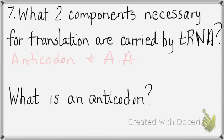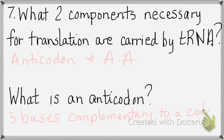An anticodon is three bases on a tRNA that are complementary to a codon. The anticodon is not exactly like the codon — it's complementary. Anticodon goes with tRNA; codon goes with mRNA. These are three bases complementary to a codon.